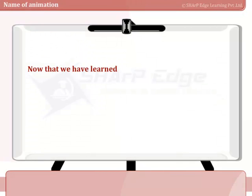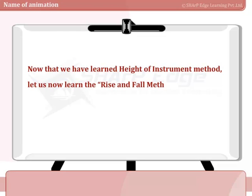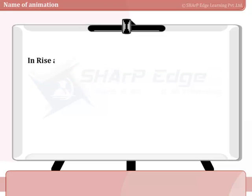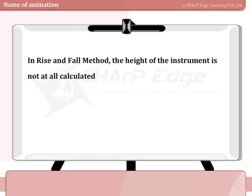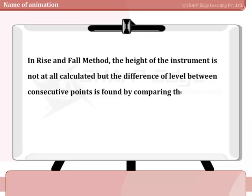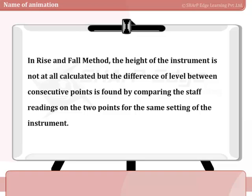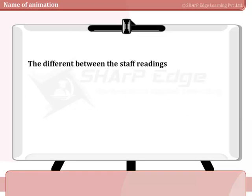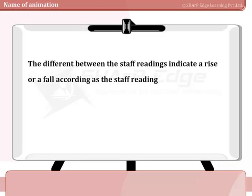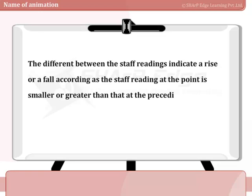Now let us learn the Rise and Fall Method. In Rise and Fall Method, the height of the instrument is not calculated, but the difference of level between consecutive points is found by comparing the staff readings on the two points for the same setting of the instrument. The difference between the staff readings indicates a rise or a fall according as the staff reading at the point is smaller or greater than that at the preceding point.